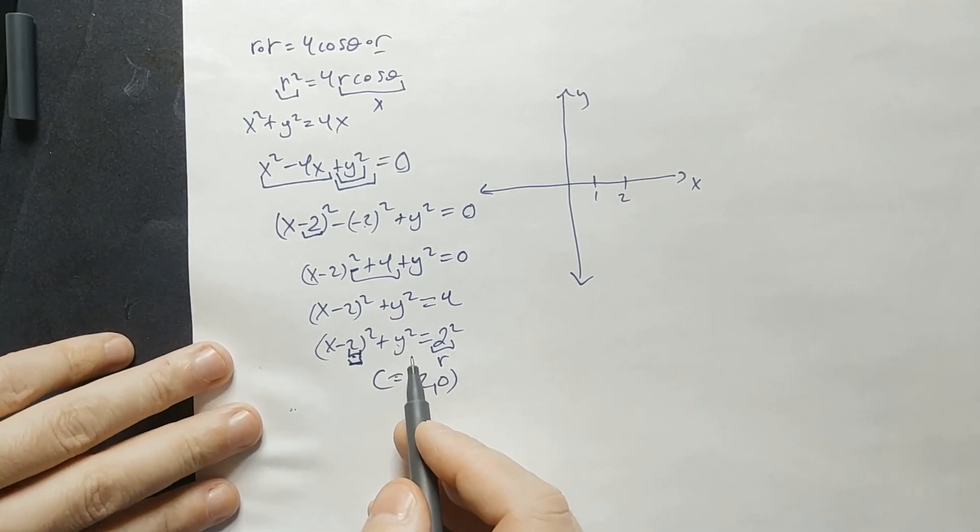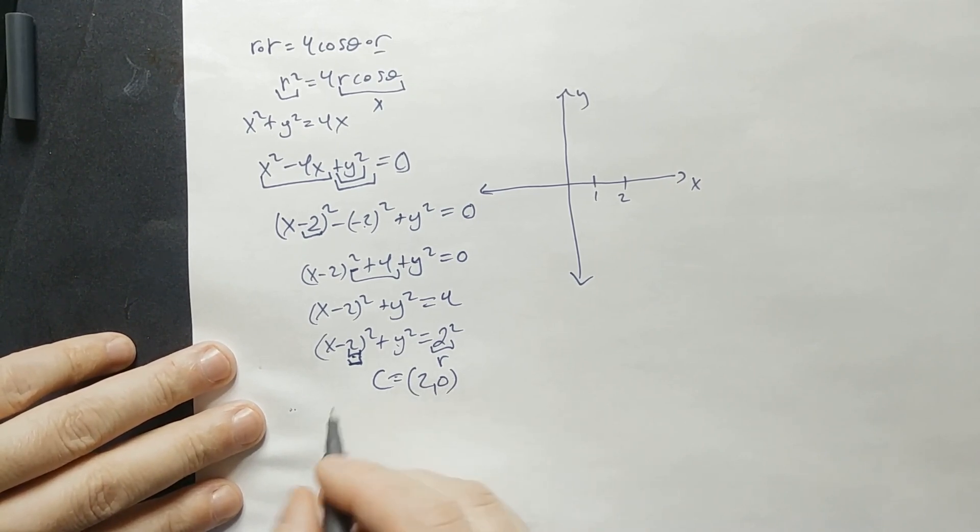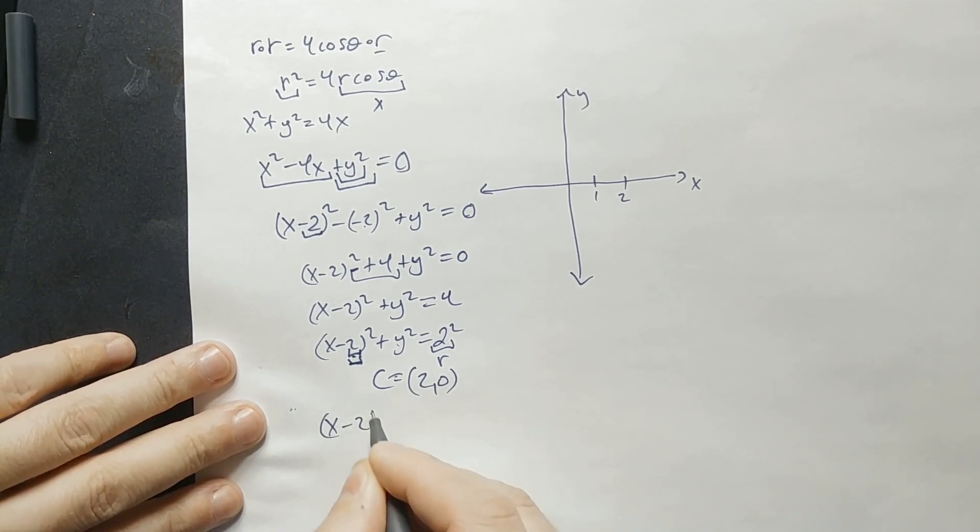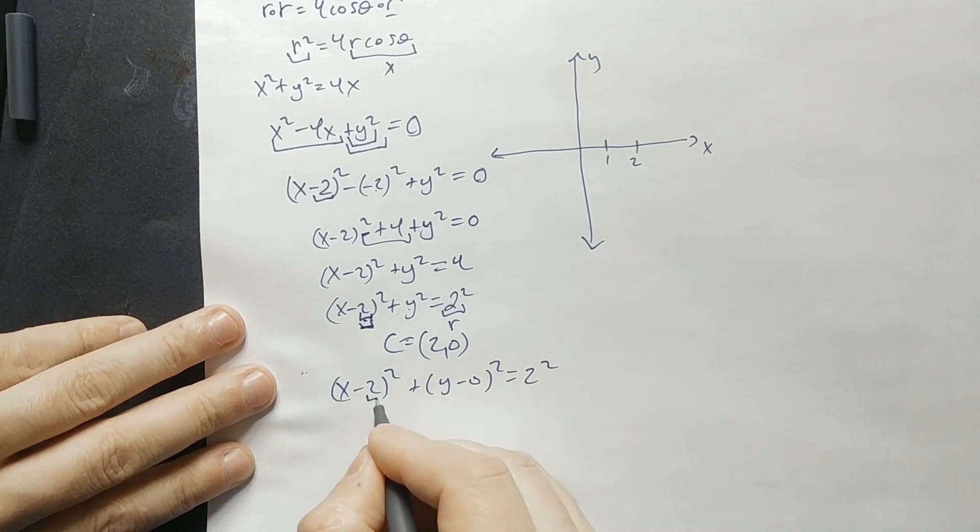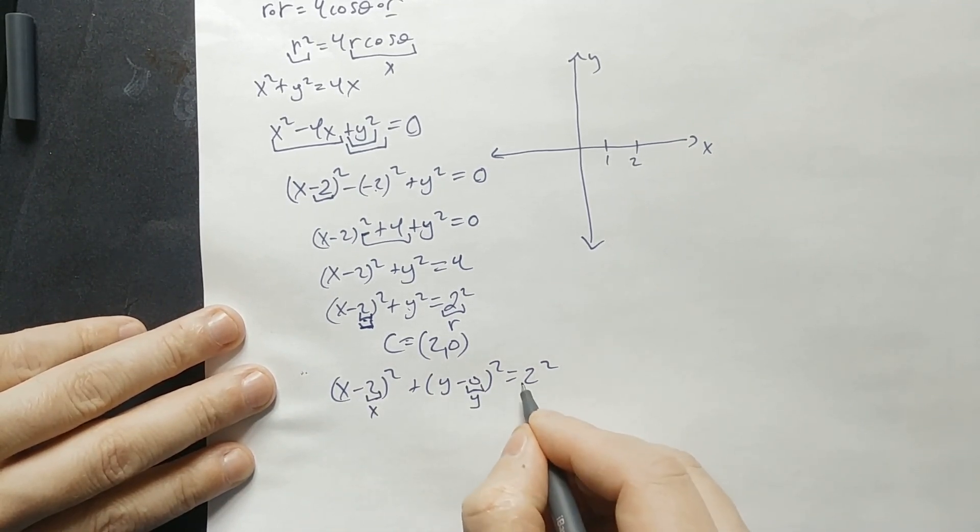The y squared term, if you have trouble seeing why there's a zero, you can write this as x minus 2 squared plus y minus 0 squared equals 2 squared. That's a fuller form because you see then this is like the x coordinate of the center. This is the y coordinate of the center.